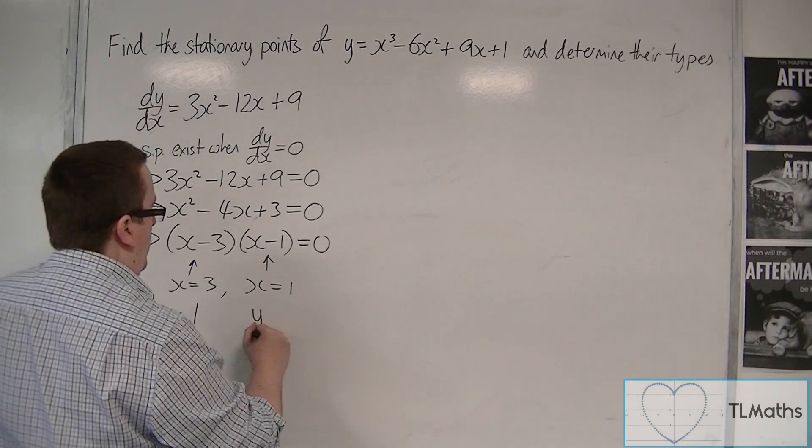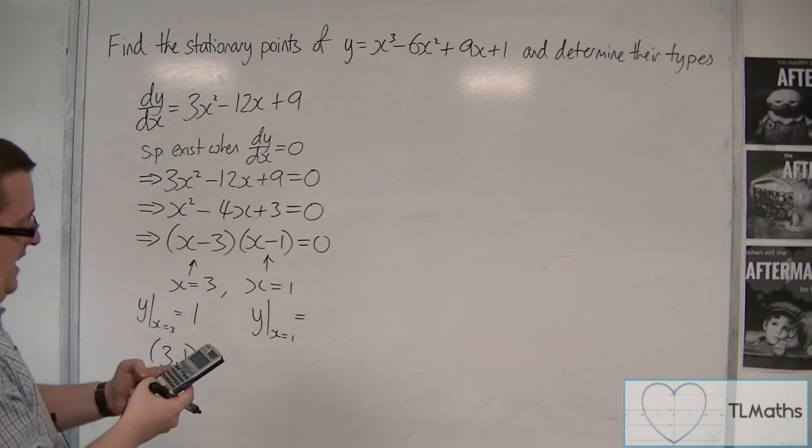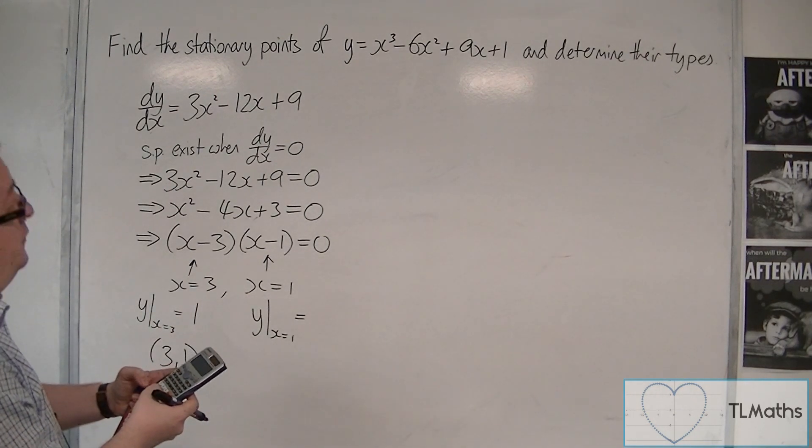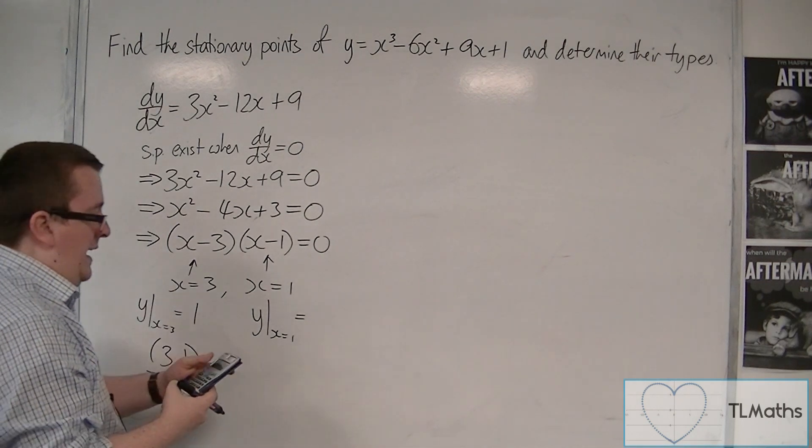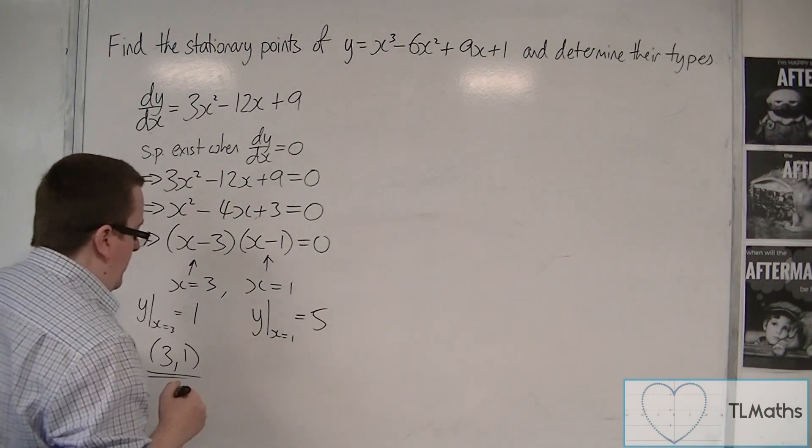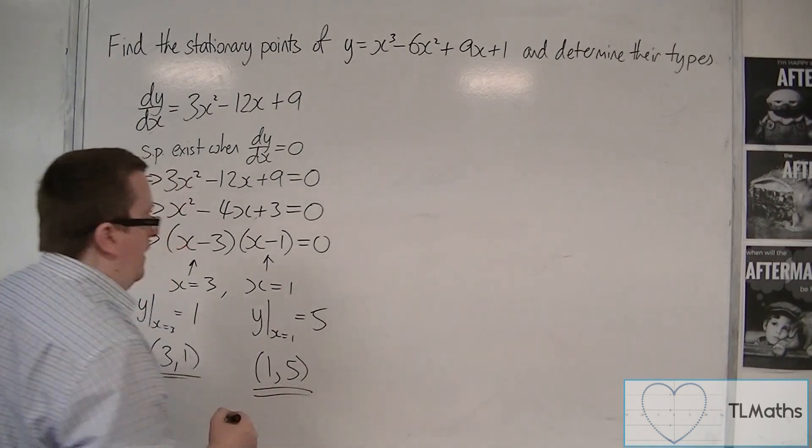And y, when x equals 1, we're going to get 1³ - 6(1) + 9(1) + 1, and that's getting me 5. So the second stationary point is at (1, 5).